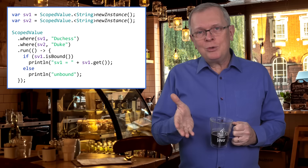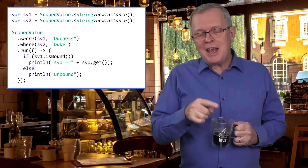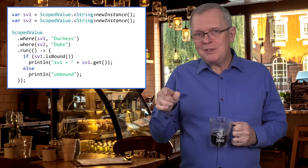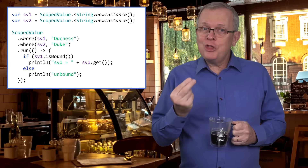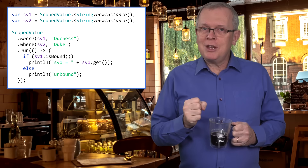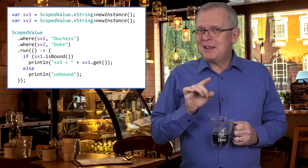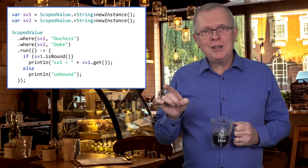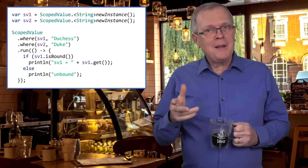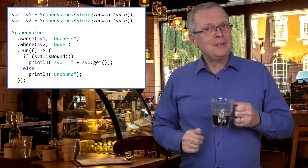Because scope values can be shared among threads, they should be non-modifiable. But you can still rebind a given scope value if that is what you need.